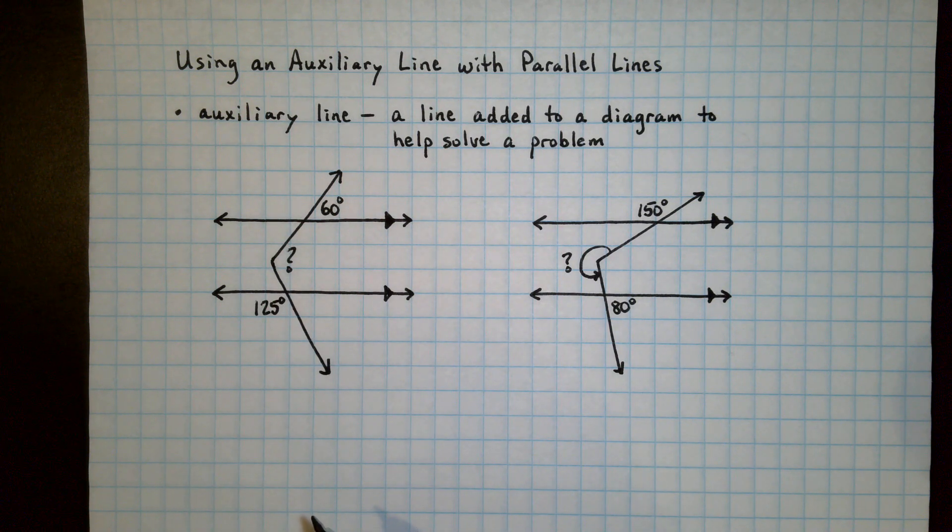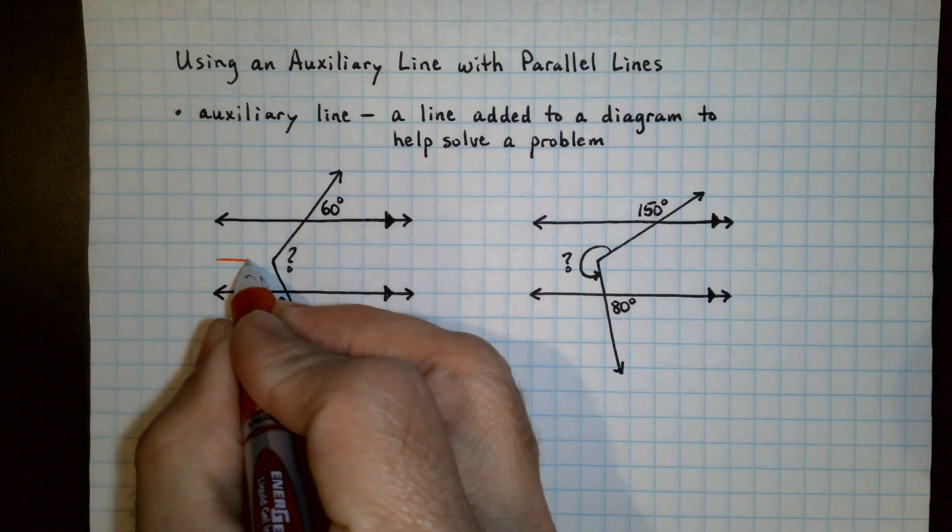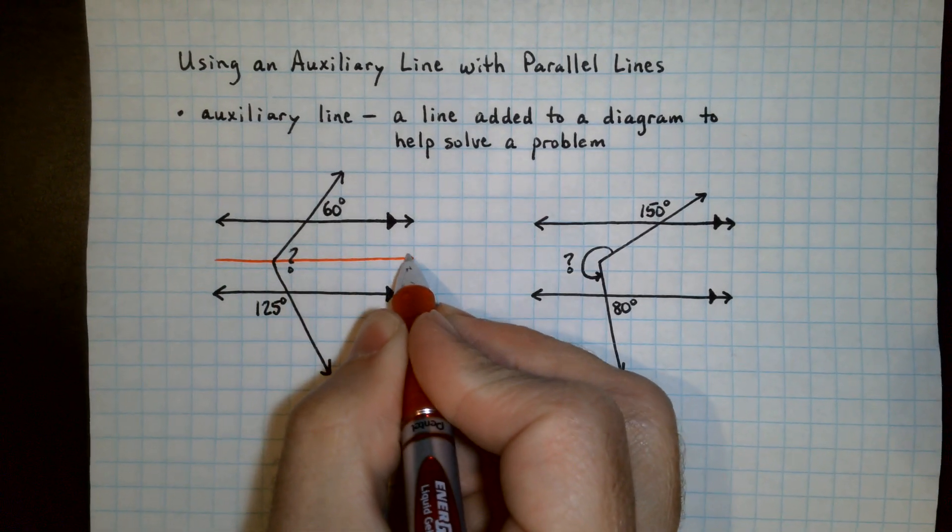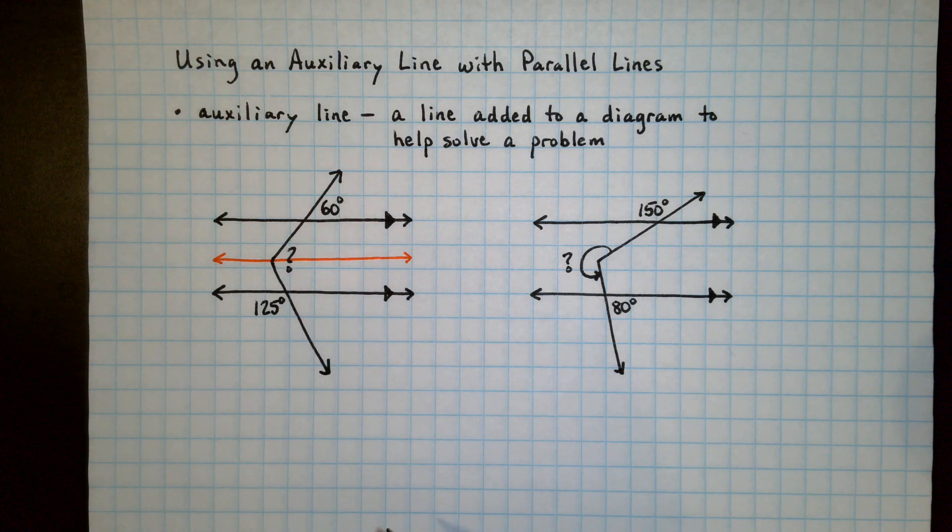But what we can do is add an auxiliary line, an extra line, and the way we have to do it here is to draw a line that is parallel to the existing lines and goes through the vertex of the angle.